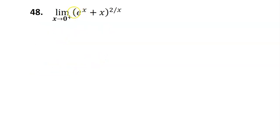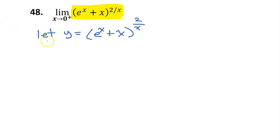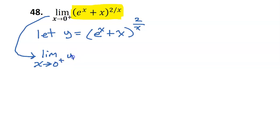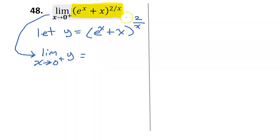Let's begin. To make things simpler, I'm going to take this entire expression and call it y. In other words, let y equal this expression. In that case, the original problem can be written more simply as the limit as x approaches 0 from the right of y. We could not do direct substitution because if we substitute 0 for x, we're dividing by 0, which is undefined. And none of the techniques we've learned will allow us to solve this, so we're going to have to use logarithms.